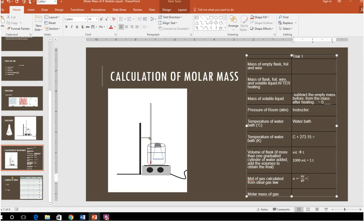So you're going to have n equals PV over RT. This is going to be a really small number. It's going to be something like 0.00 something. Just make sure you're following your sig figs. You'll be okay.